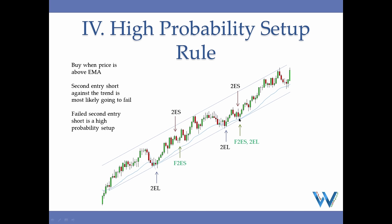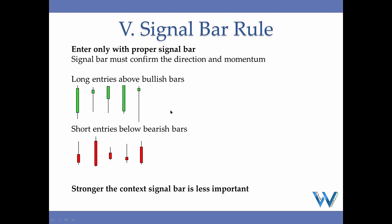The fifth price action rule is the signal bar rule: you only want to take longs above bullish bars and only take shorts below bearish bars. You only want to enter with the proper signal bar. The signal bar must confirm the direction and momentum of the market. These are examples of good bullish bars to go long above, and good bearish bars to sell below. You never want to sell below a bullish bar or buy above a bearish bar. You need to combine the high priority setup rule with the signal bar rule to maximize the probabilities of a trade succeeding.